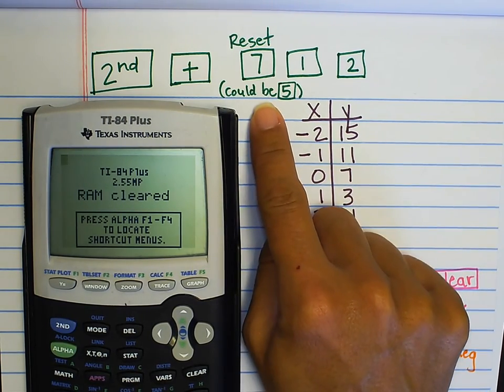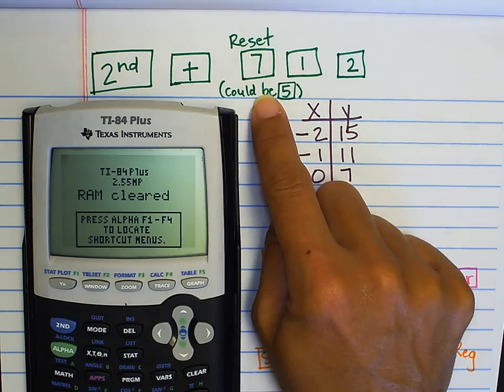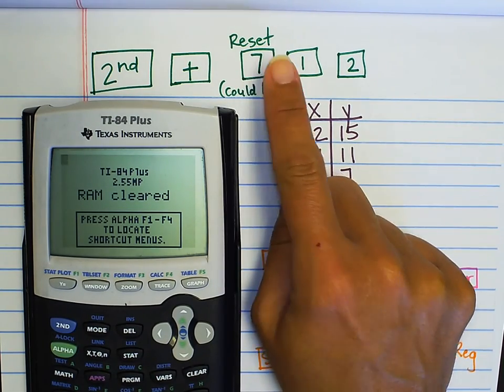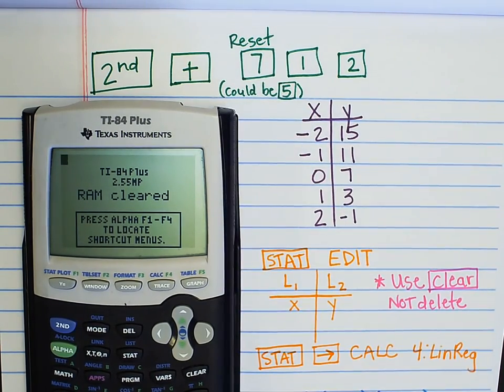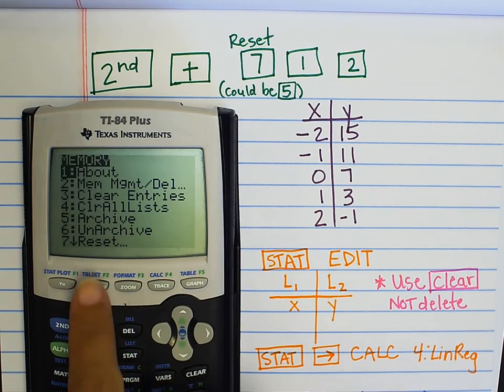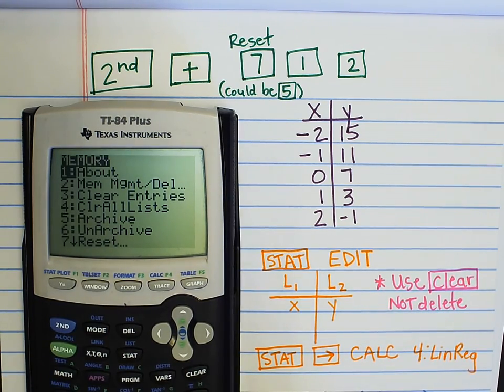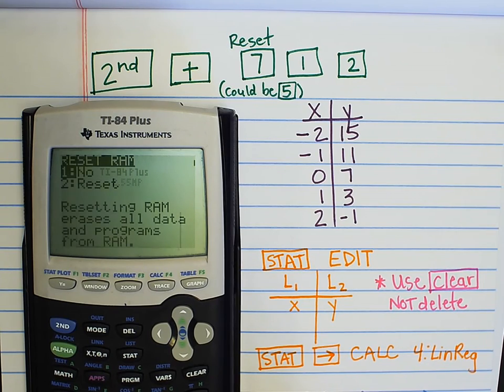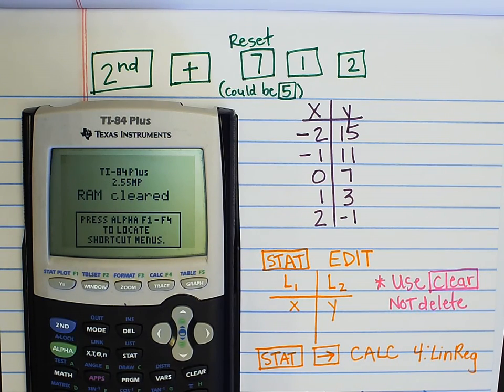Now, if you have an older calculator, it could be five instead of seven. So, second plus seven, one, two should be all of our calculators, I believe, but if you're using a different calculator that wasn't issued to you, you may have to use second plus and then here reset might be five. But second plus seven, one, two should work to clear the RAM. What that does is just reset all your settings, all your windows, everything will be back to what we would consider the normal.